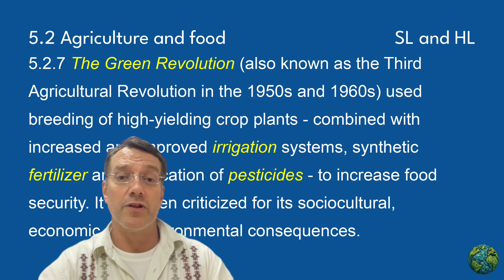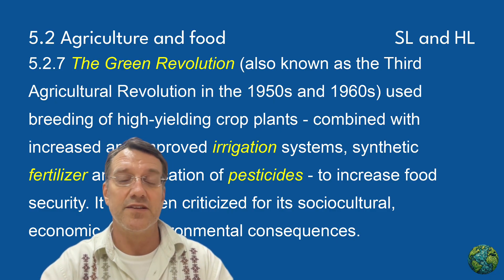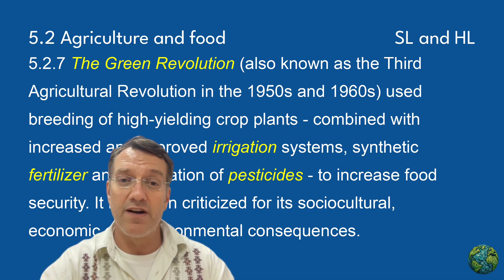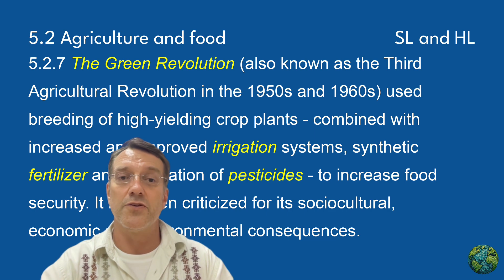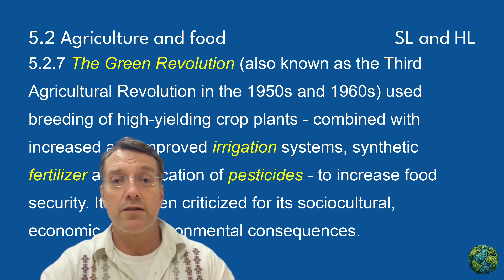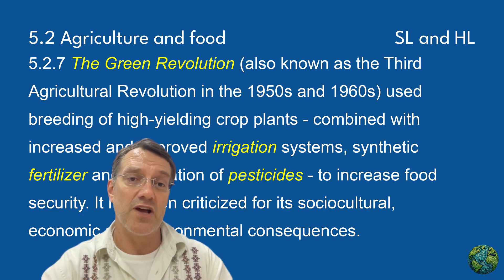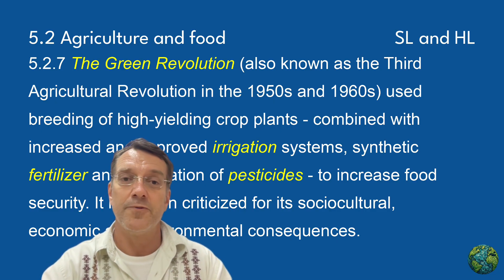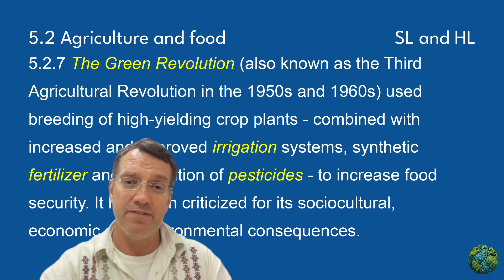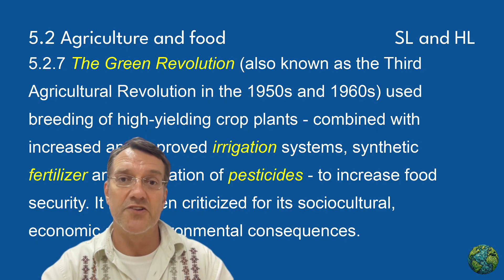The Green Revolution, also known as the third agricultural revolution, transformed global agriculture in the 1950s and 1960s. This movement used the breeding of high-yield crop plants combined with increased irrigation systems, synthetic fertilizers, and pesticides to dramatically increase food security. However, this revolution has been criticized for its sociocultural, economic, and environmental consequences. Understanding both its benefits and its drawbacks can help you think about sustainable approaches to feeding our growing population.